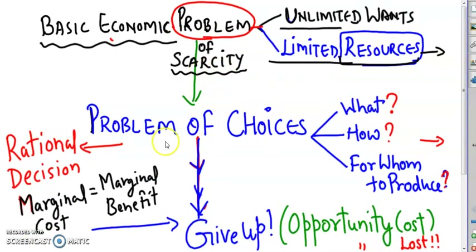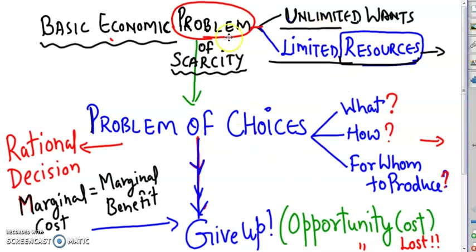Because these resources are limited, as an individual or as an economy, it leads us to the problem of choices — because you want to make the most efficient use of these resources to be able to satisfy maximum wants. With the problem of choices, the very first question that comes is: what? What do I produce with the resources that I have?